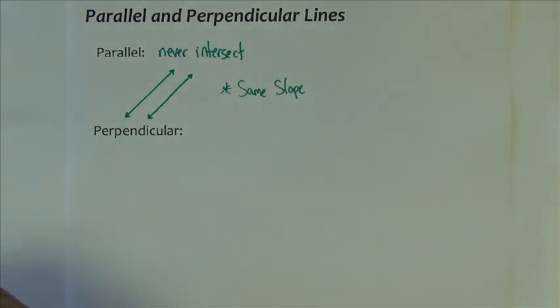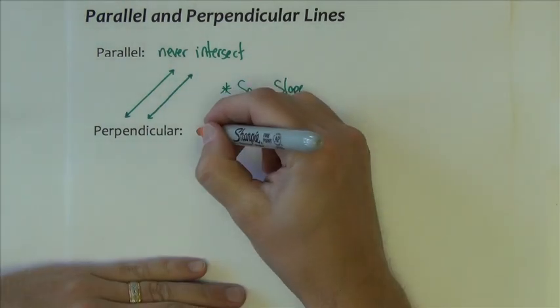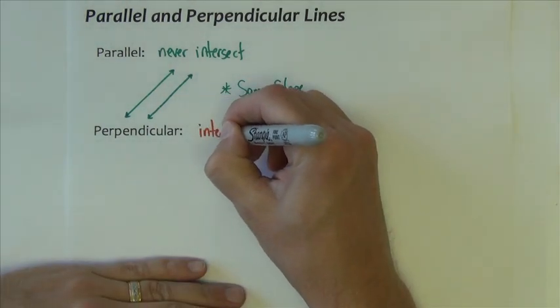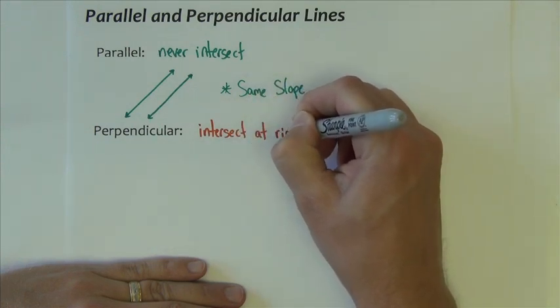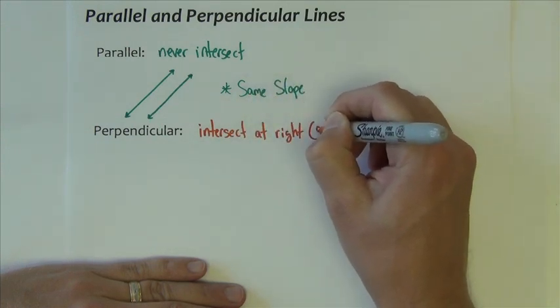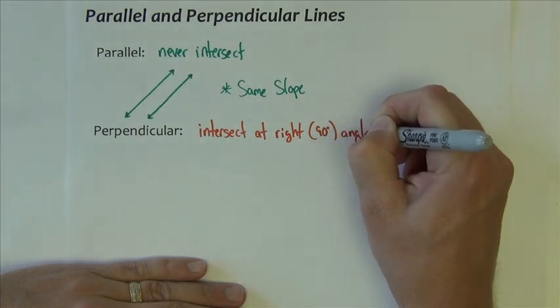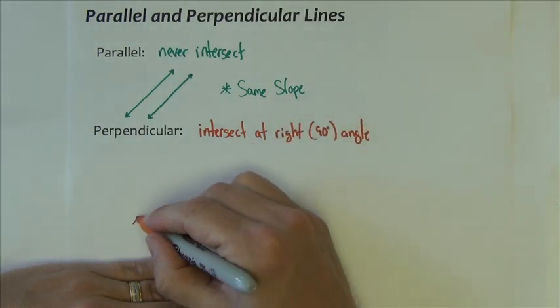Now, on the other hand, perpendicular lines intersect at a right or 90 degree angle. So they look something like this.